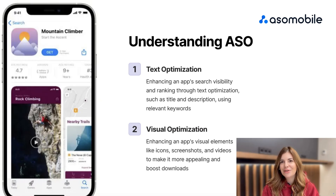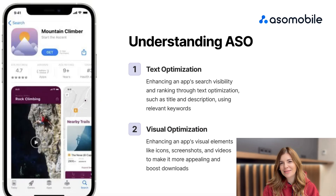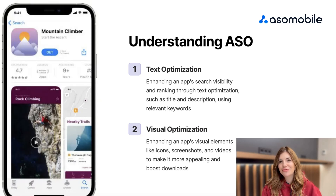Text ASO focuses on improving an app's visibility and ranking in search results by optimizing its text elements like the title and description. This involves using relevant keywords to help users find the app when searching for specific terms related to its features or use cases.